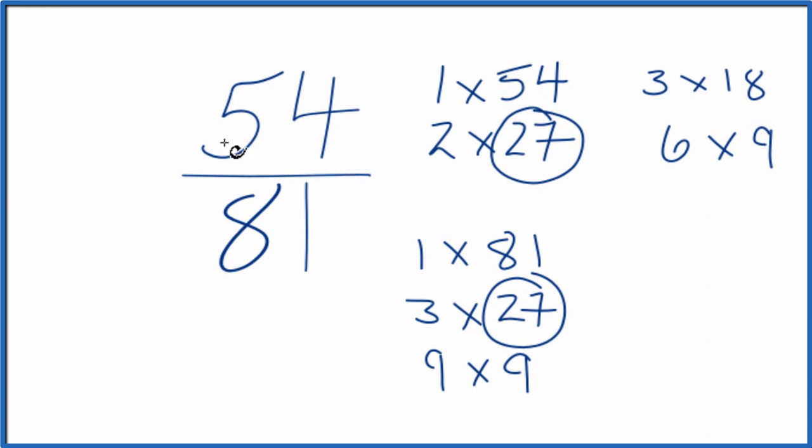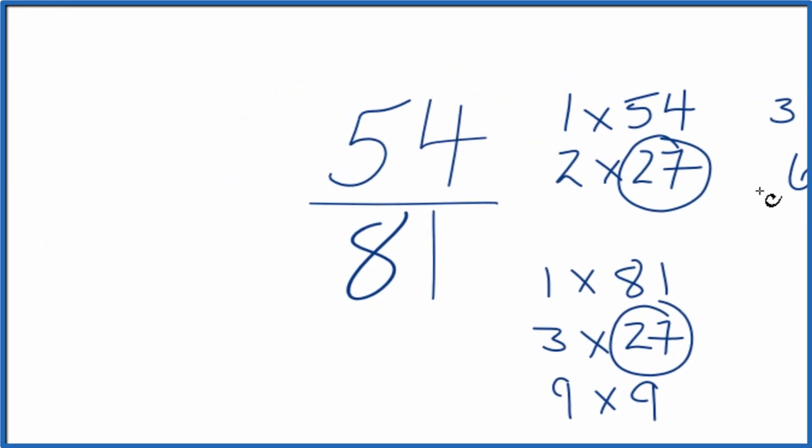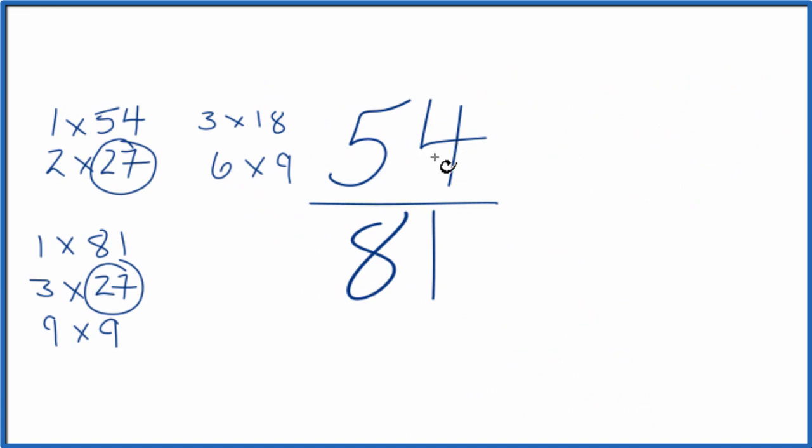So I'll divide 54 by 27 and 81 by 27. We'll simplify 54 over 81. Let's move these over here. So 54 divided by 27, that's 2. And then 81 divided by 27 is 3. We get two thirds.